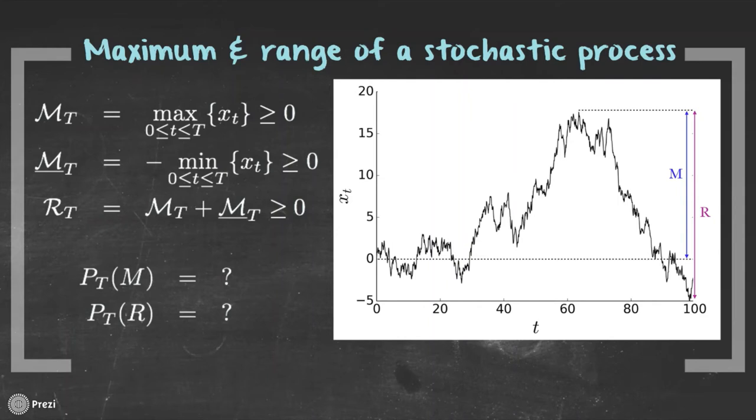If we consider a single realization of our stochastic process up to time capital T, we can define its maximum and range as you can see here. The plot shows a graphical representation of our quantities of interest.